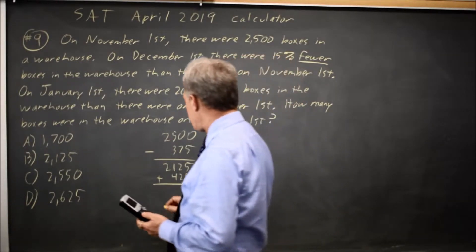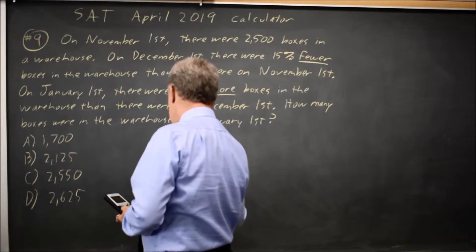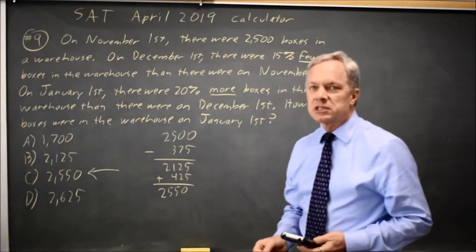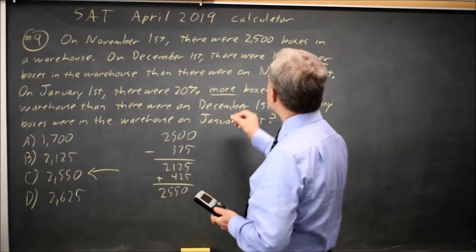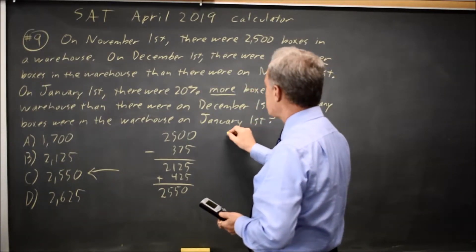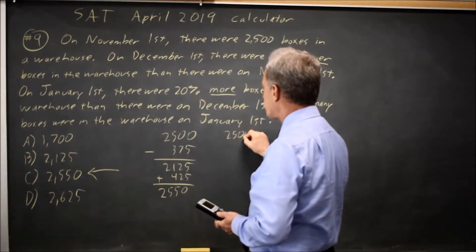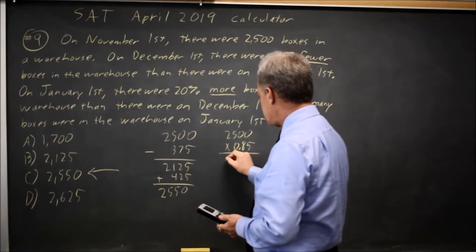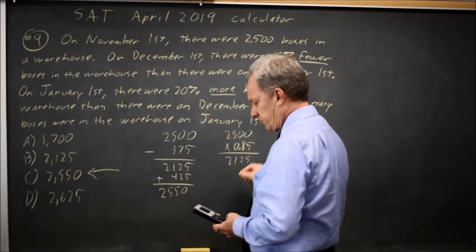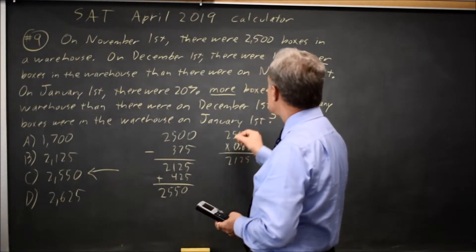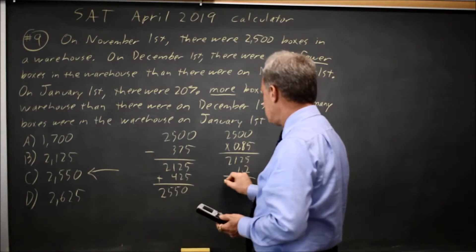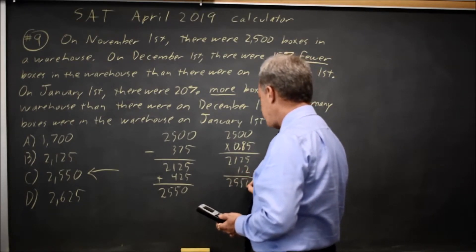And that gives us 2550, which is choice C. You can do it slightly quicker by saying if you have 15% fewer, that would be 2500 times 0.85, which is 2125. And then 20% more would be 2125 times 1.2, which is 2550.